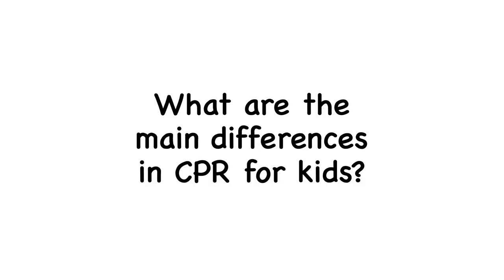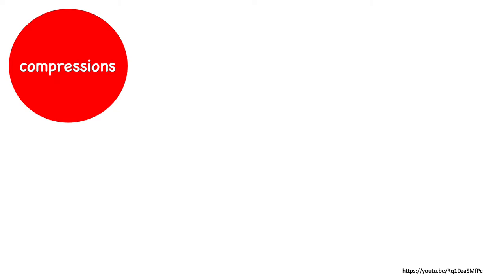So what are some of the main differences in CPR for kids? There are just a few major differences when looking at resuscitation for kids versus adults. When we look at compressions, if we are a team with two providers or more, we'll use a compression-to-ventilation ratio of 15 to 2. However, if we're a single provider, we'll still go with a ratio of 30 to 2.